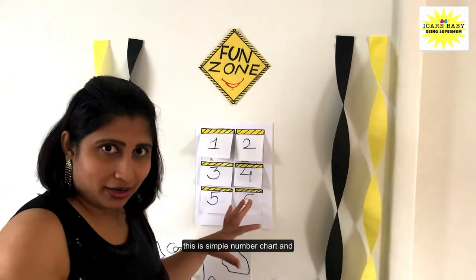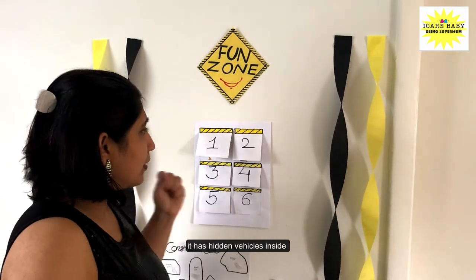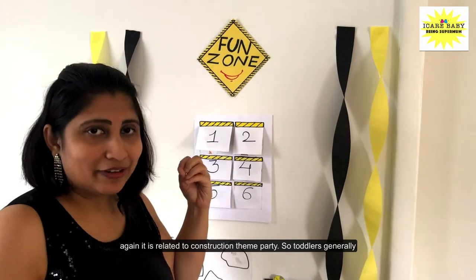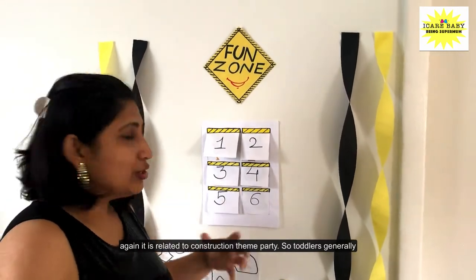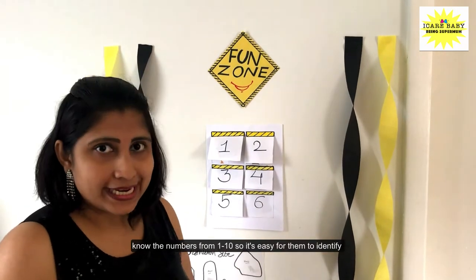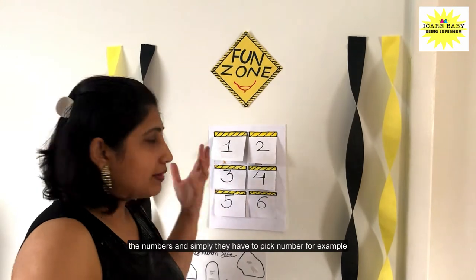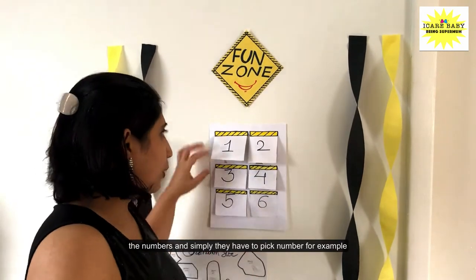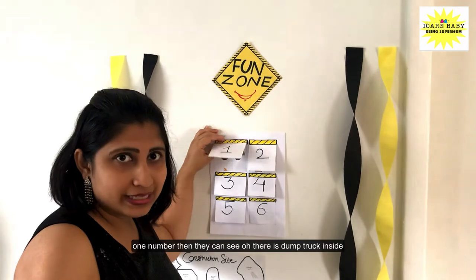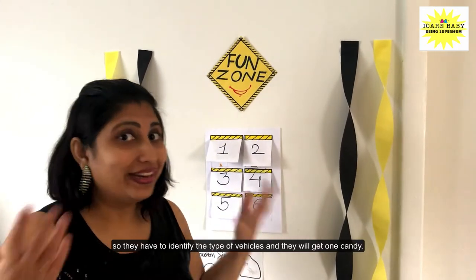This is a simple number chart and it has hidden vehicles inside — again, related to the construction theme party. Toddlers generally know numbers from 1 to 10, so it's easy for them to identify the numbers and simply pick them. For example, for number one, they can see there is a dump truck inside. So they have to identify the type of vehicle and they will get one candy.